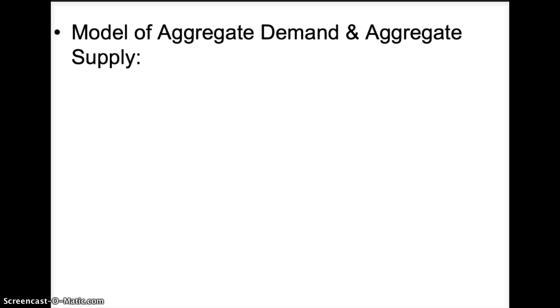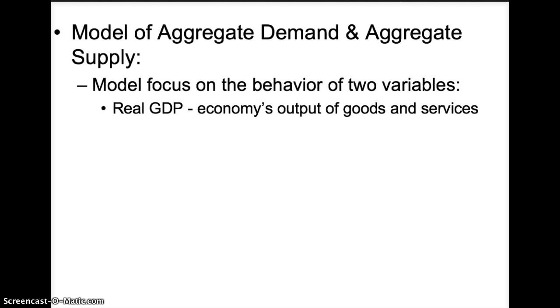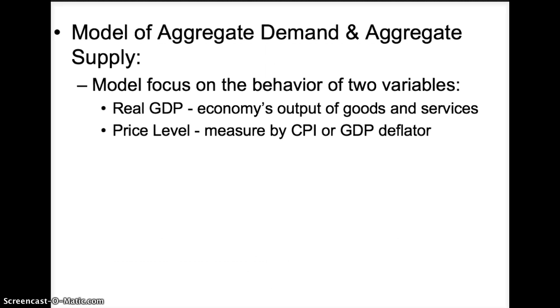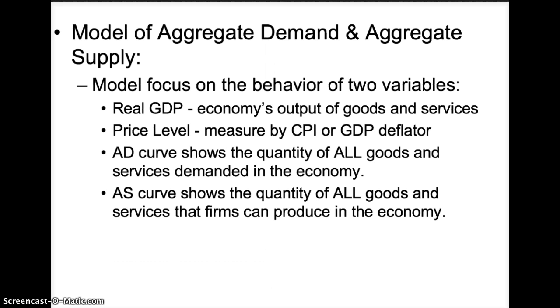The model of aggregate demand and aggregate supply can be used to analyze short-run economic fluctuations in the economy. The model focuses on the behavior of two variables: real GDP and the price level. Real GDP is the economy's output of goods and services, and the price level is the overall level of prices measured by the Consumer Price Index or the GDP Deflator. Aggregate Demand shows the quantity of all goods and services demanded in the economy, and Aggregate Supply shows the quantity of all goods and services that firms can produce in the economy.